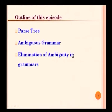As far as this episode is concerned, we are covering the definition for parse tree, how a parse tree is constructed given a grammar and a string which is part of the language, followed by ambiguous grammar — when a grammar is called ambiguous — and then the elimination of ambiguity of a grammar: given an ambiguous grammar, how to find an equivalent unambiguous grammar.